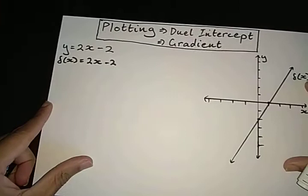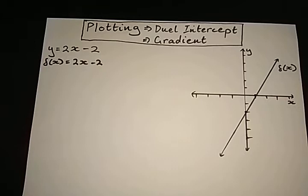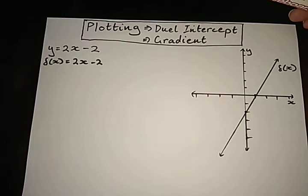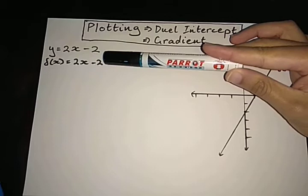When we are plotting our straight line graphs, there's usually two methods that we are going to use. And that is going to be the dual intercept and the gradient method. I've used the example of y is equal to 2x minus 2. Now, let's get into the habit of using functional notation. So I'm going to rewrite this as f(x) is equal to 2x minus 2.